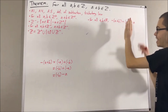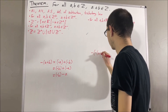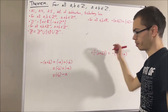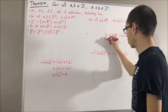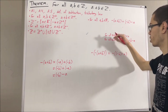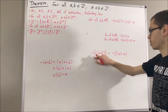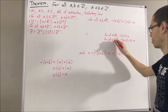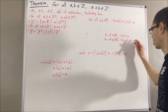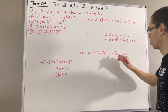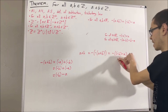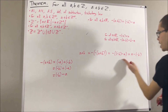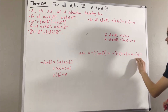If we take this equation and negate both sides, then using the result that for all real numbers x the negative of negative x equals x, the left-hand side becomes a plus b. And since the negative of a minus b equals b minus a, applying this to the right-hand side gives us a minus the negative of b. So this chain of equalities shows a plus b is equal to a minus the negative of b.